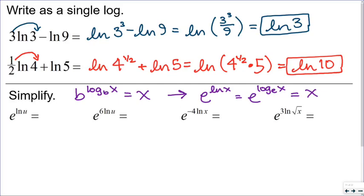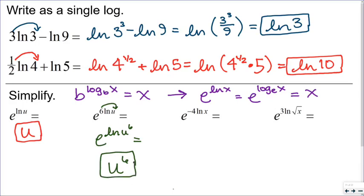So in this first problem, e to the natural log of u equals u. In the next problem, I need to rewrite it so the exponent says e to the natural log of something. I'll rewrite this as e to the natural log of u to the 6th, bringing that 6 up as an exponent. Now I have e to the natural log of something, which becomes u to the 6th. Similarly, the next problem rewrites as e to the natural log of x to the negative 4th, which equals x to the negative 4th, or 1 over x to the 4th.